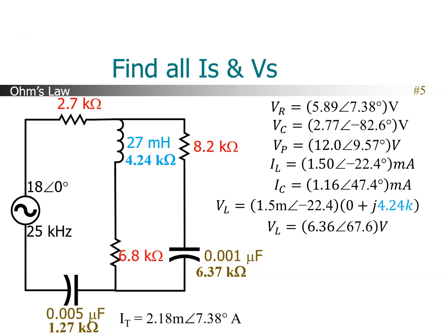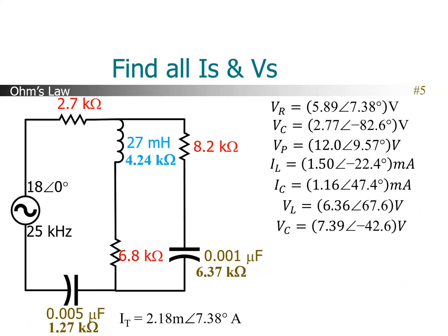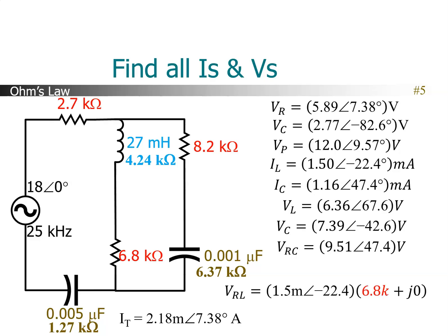That's the voltage across that inductor. Now the voltage across the capacitor is the capacitor branch current times the Z of the capacitor, and that works out to 7.39 volts at angle −42.6. Now we have to get the voltage across the two resistors in the parallel branches. The resistor in the capacitor branch — the 8.2K resistor — is that branch current 1.16 ∠47.4 times the Z of that resistor, 8.2K + j0. That gives us 9.51 ∠47.4. And then the same thing with the 6.8K resistor in the inductive branch: current 1.5 mA ∠−22 times 6.8K + j0, giving us a voltage of 10.2 ∠−22.4.